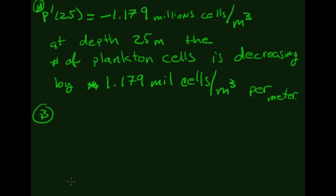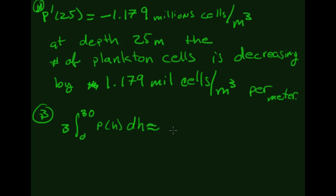Part b: we have a vertical column of water where each slice has an area of 3 square meters. We're doing an accumulation from 0 to 30: 3 times the integral from 0 to 30 of p(h) dh. Throwing that into the calculator gives approximately 1675 million plankton cells.